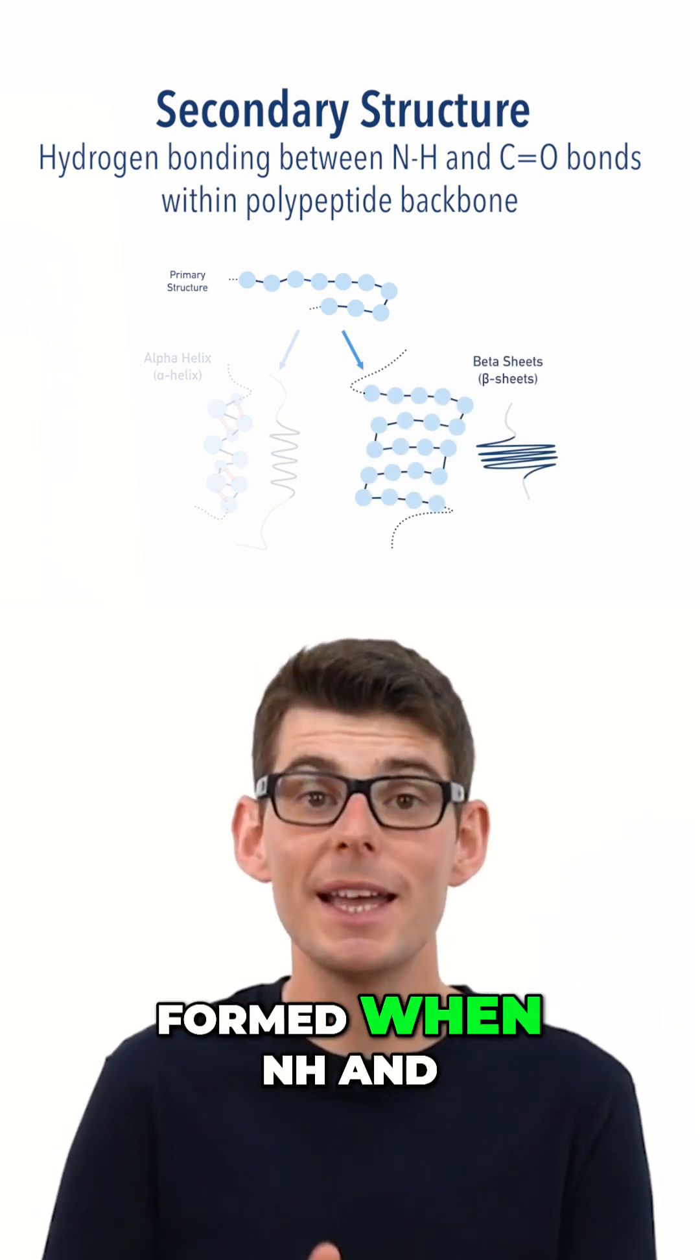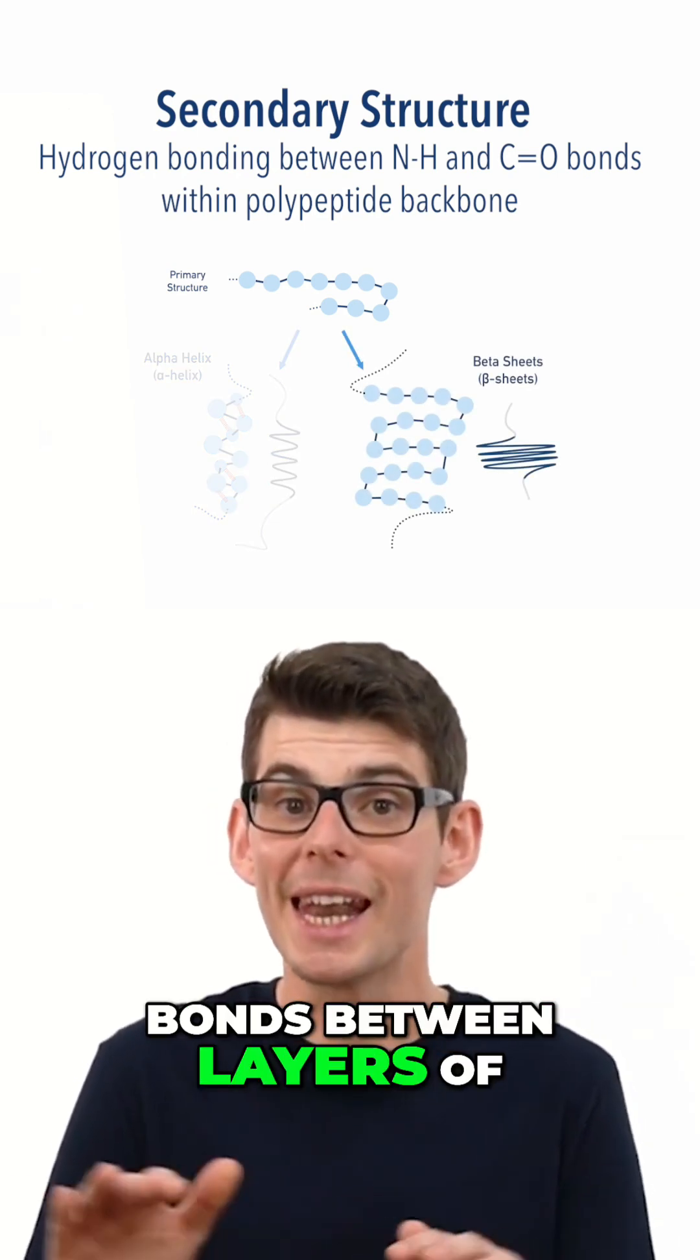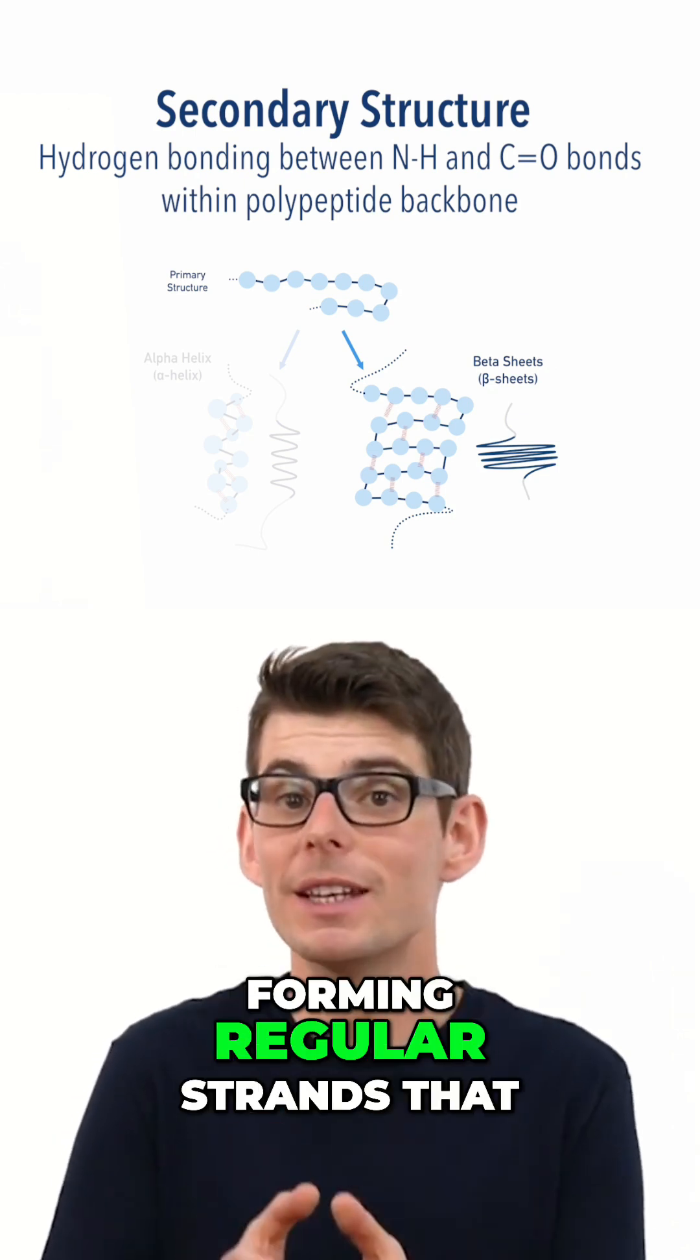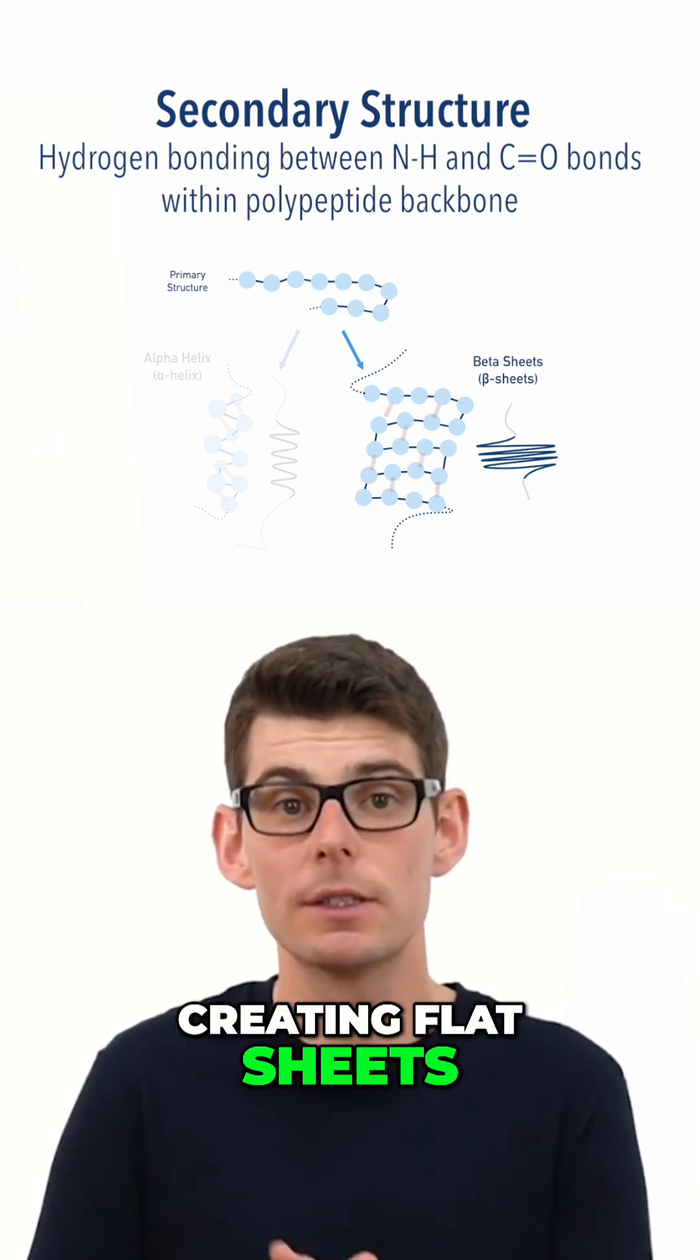Beta pleated sheets are formed when NH and C double O groups form hydrogen bonds between layers of folded amino acid chains, forming regular strands that run against each other, creating flat sheets.